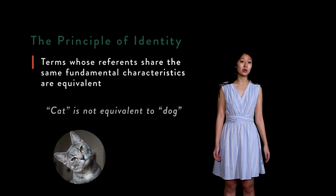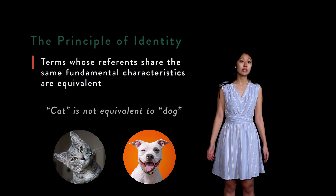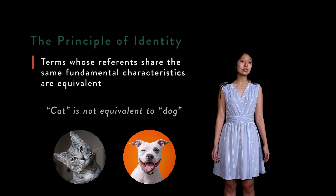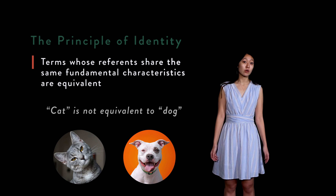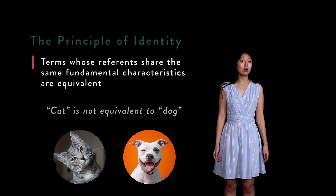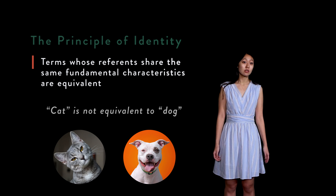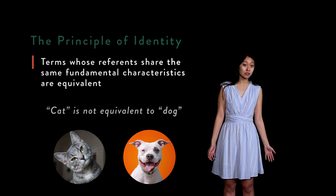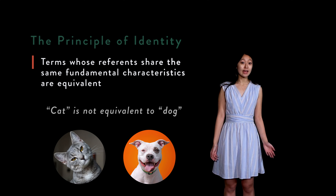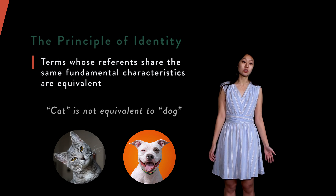Two: 'cat' is not equivalent to 'dog.' The fundamental characteristics of the category 'cat' are different from those of the category 'dog.' Cats meow whereas dogs bark; cats arch their backs whereas dogs bare their teeth, etc. Applying the knowledge that two terms are not equivalent when their references don't share the same characteristics, we can conclude that 'cat' and 'dog' must be non-equivalent terms.